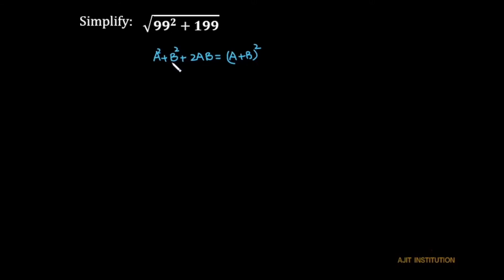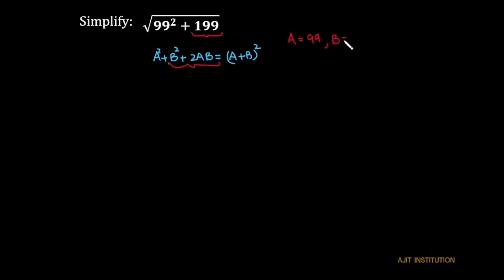The value of b is hidden within this whole expression. The whole expression under the square root is 99 squared plus 199, so the value of a is equal to 99 and the value of b we have to calculate.